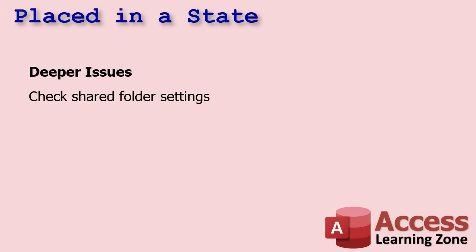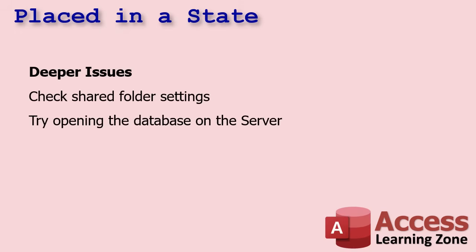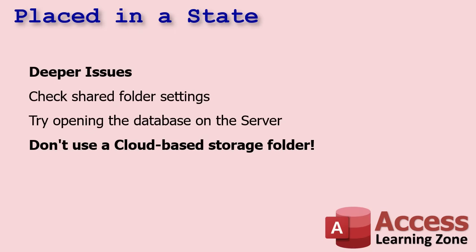If you're only getting this error on one machine, try checking the shared folder settings. Make sure that person has read and write access to the folder that the database is in — that's a Windows-level thing. If that doesn't work, try opening the database on the server machine. Whatever machine is hosting the actual database file — whether it's a real server or just a peer-to-peer setup — try opening it there. If it works on that machine but not another, then you have a networking issue or Windows file permissions issue, not an Access problem. Also make sure you're not using a cloud-based storage folder — Google Drive, Dropbox, OneDrive. This should be on a regular local drive, preferably your internal hard drive.